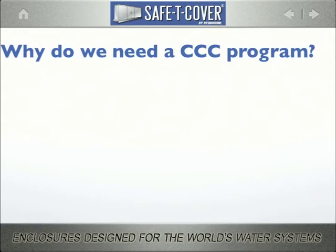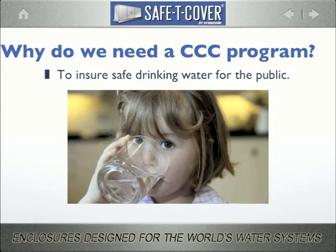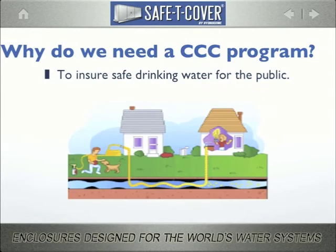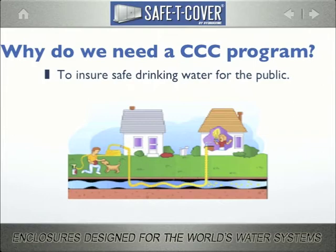So why do we need a cross-connection control program at all? Well, that's easy — safe drinking water. But how does backflow prevention protect drinking water? I think this ancient art illustrates the point perfectly. Our friend has attached a pressurized sprayer to his garden hose spigot. Because the pressure in that sprayer has now overcome the ambient pressure in his home's water line, some of that sprayer's chemicals are now flowing back into the city's water supply at the street. At the same time, his neighbor draws a glass of water from her tap, giving new meaning to the word fire water.